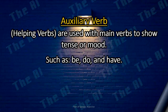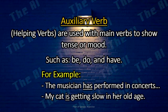The auxiliary verb. Auxiliary verbs, also called helping verbs, are used with main verbs to show tense or mood, such as be, do, and have. For example: The musician has performed in concerts all over the world. My cat is getting slow in her old age.